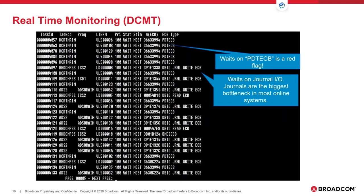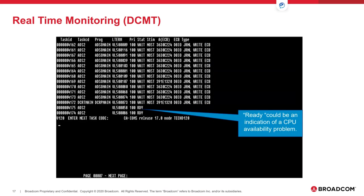This screen shows a DCMT Display Active Task command, page five — another way to display what active tasks are doing in the system. It has slightly less information but is essentially the same as the active user task detail screen in PMRM, and is an alternative if you don't have the Performance Monitor. We again see waits on PDT ECBs, pool issues, and journal IO waits. On page seven of this command we can see two tasks in Ready status, which again indicates CPU availability problems.